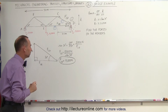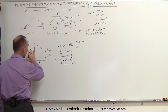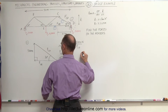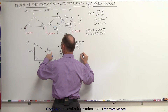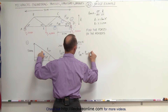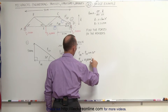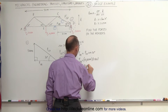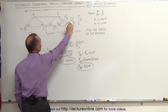FCD is 10,000 newtons in compression. Now we can find FDE, which is the adjacent side. Since we already know the hypotenuse, FDE equals FCD times the cosine of 30 degrees. So FDE equals 10,000 newtons times 0.866, which means FDE equals 8,660 newtons. Using this first triangle, we've found the magnitude of the force on both of these members.